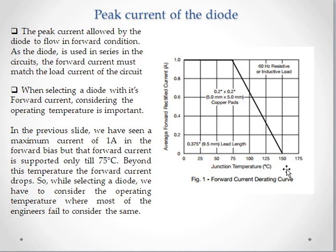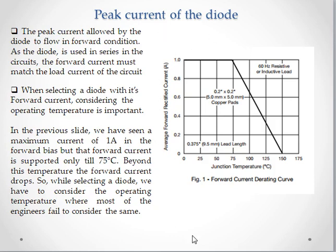As the temperature goes further to 150°C, the total current allowed through the diode is zero. Even if you apply a forward voltage that would normally make the diode conduct, the current through the diode is zero. This is an important consideration when selecting a diode — you need to know the operating temperature of your circuit and verify in the datasheet that the current is as specified over the entire temperature range.